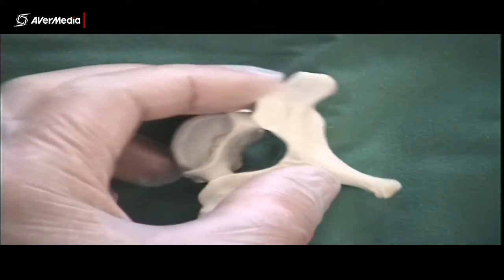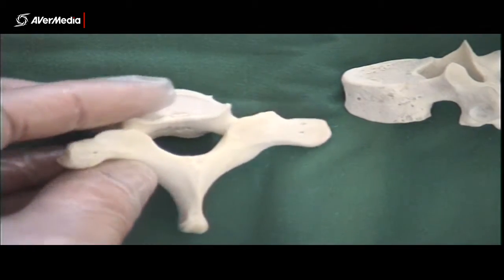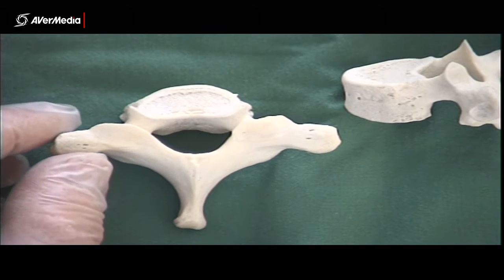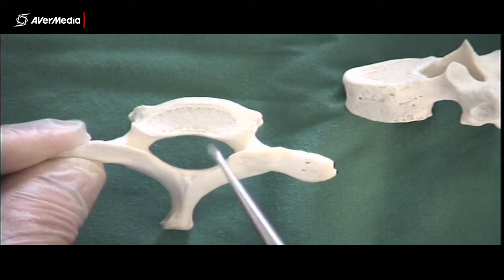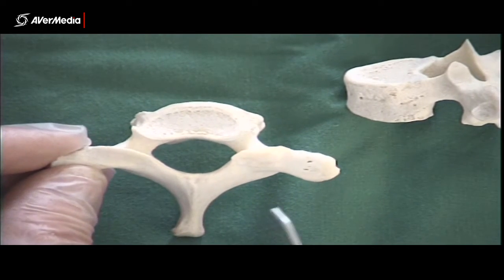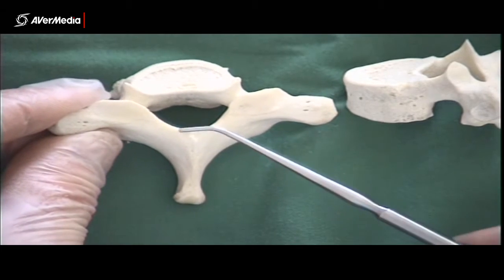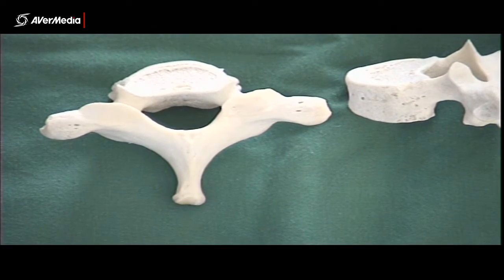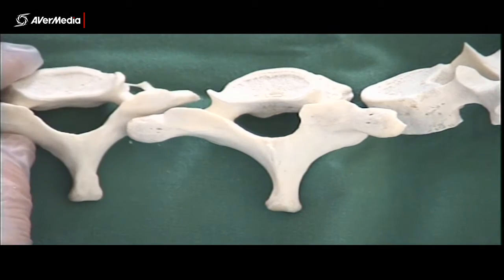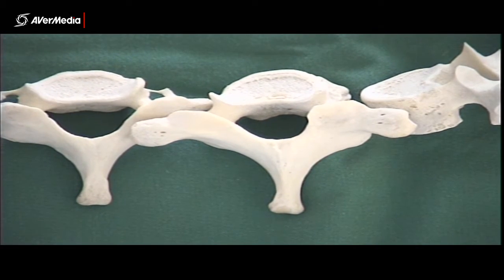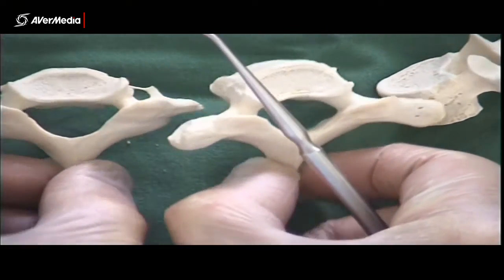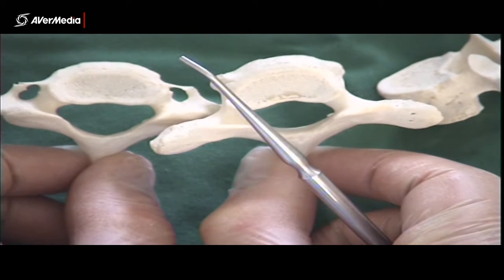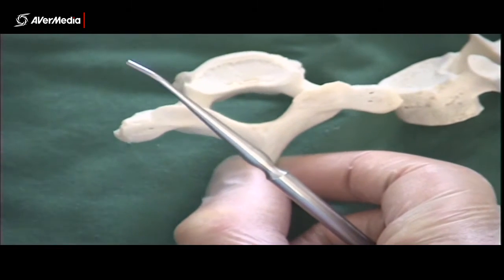Let's have a look at a couple of atypical ones too. Here we've got T1. Now T1 doesn't quite have the classic heart-shaped body — nearly, but not quite. It also has a spinous process that looks pretty similar to C7, so it can be difficult to tell apart from C7. Hopefully you'll have spotted the transverse foramen, which makes it pretty easy — but they look pretty similar apart from that.